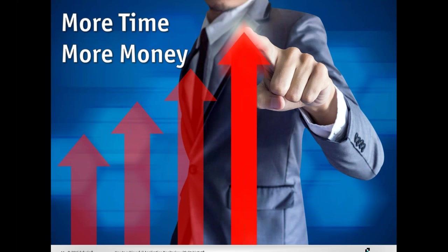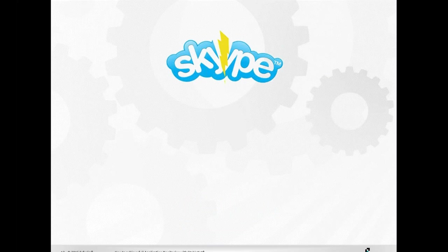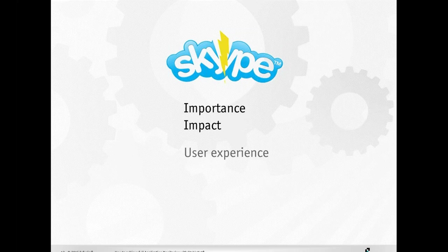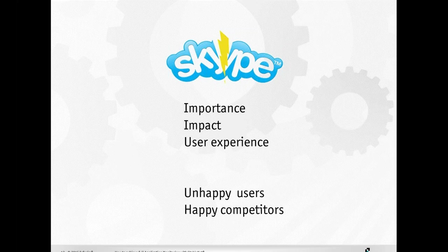An example of why application monitoring is so important is the latest news of a global outage. There was a Skype outage some days ago lasting several hours. You could see how important a service is and what impact it can have. Personally, I could not set up a telephone call with my colleagues and had a very bad user experience. I was an unhappy user, but there were happy competitors — I switched over to GoToMeeting or used my mobile phone. Additionally, there was bad press about this issue. Think about which is the most important application in your company — is it well monitored and can you proactively work if any threshold is exceeded so the customer won't complain?